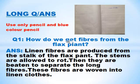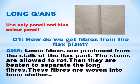Then start long question answers. Question number 1: How do we get fibers from the flax plant? Answer: Linen fibers are produced from the stalk of the flax plant. The stems are allowed to rot, then they are beaten to separate the long fibers. These fibers are woven into linen clothes.